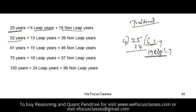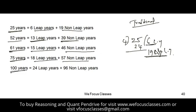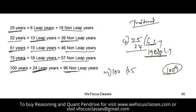In the same way, for 52 years: divide by 4 to get 13 leap years and the remaining are non-leap years. If 61 is given, 15 leap years and 46 non-leap years. If 75 years are given, 18 leap years and 57 non-leap years. If 100 years are given, 24 leap years and 96 non-leap years — because the 100th year itself is not a leap year, so we get 24, not 25.